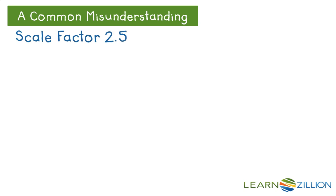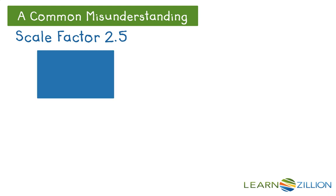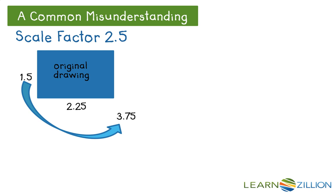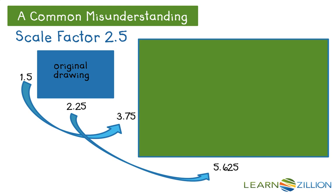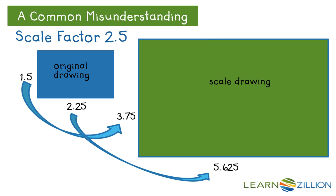The dimensions of the original drawing are multiplied by a scale factor of 2 and 5 tenths to generate the correct dimensions of the new drawing, which is shown in green. But if we mistakenly think of the scale factor as repeating the original drawing 2 and 5 tenths times like repeated addition, the new drawing is much different and incorrect. The green drawing is the correct drawing; the incorrect drawing is represented by the blue figures on top of the green. Remember, the scale factor is a multiplier of the dimensions of the original figure. If you remember that factors are numbers you multiply, you will remember that a scale factor is a number you multiply the dimensions by to make a scale drawing.